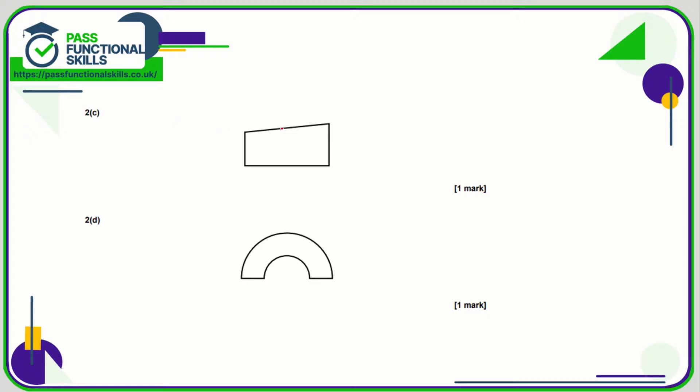Shape c is a trapezium, which has zero lines of symmetry. The semicircular shape also has just the one line of symmetry.